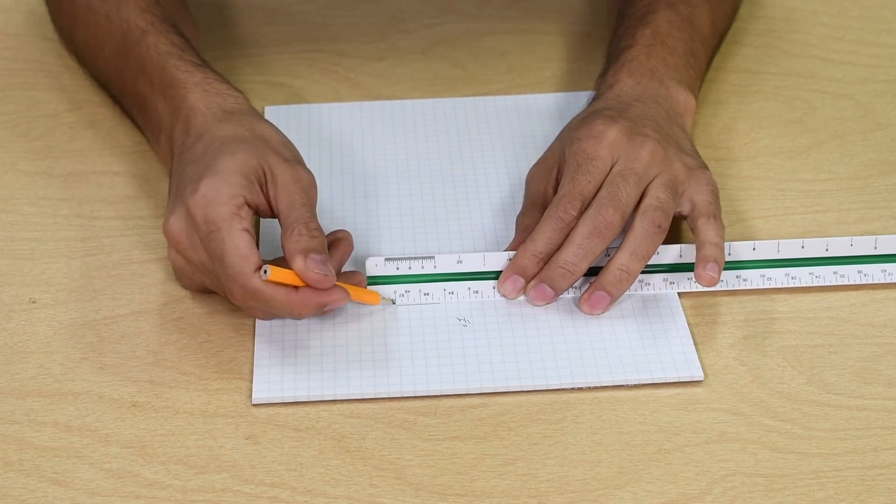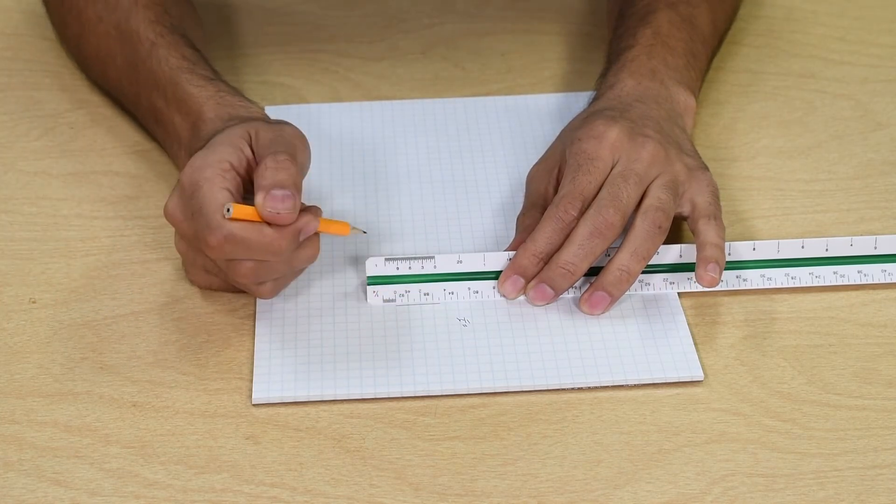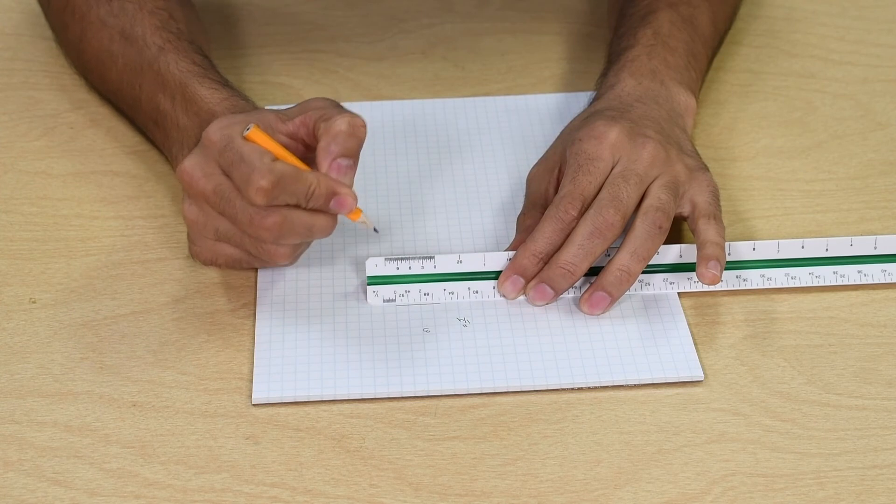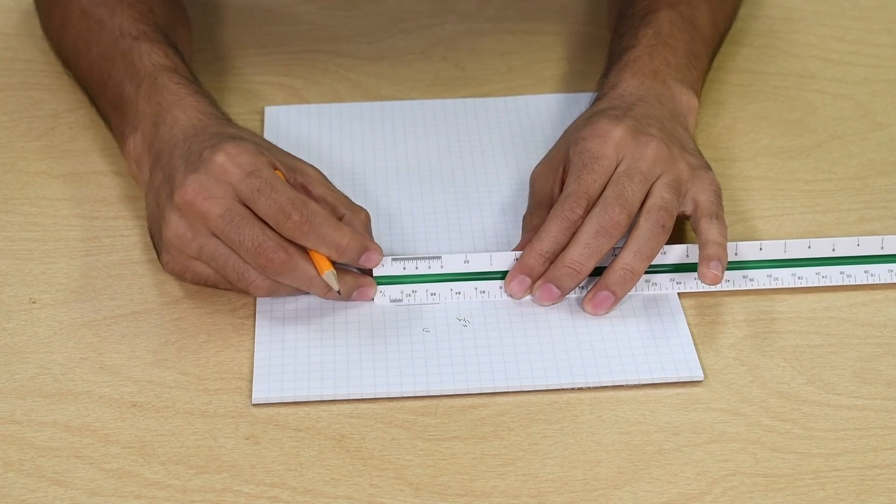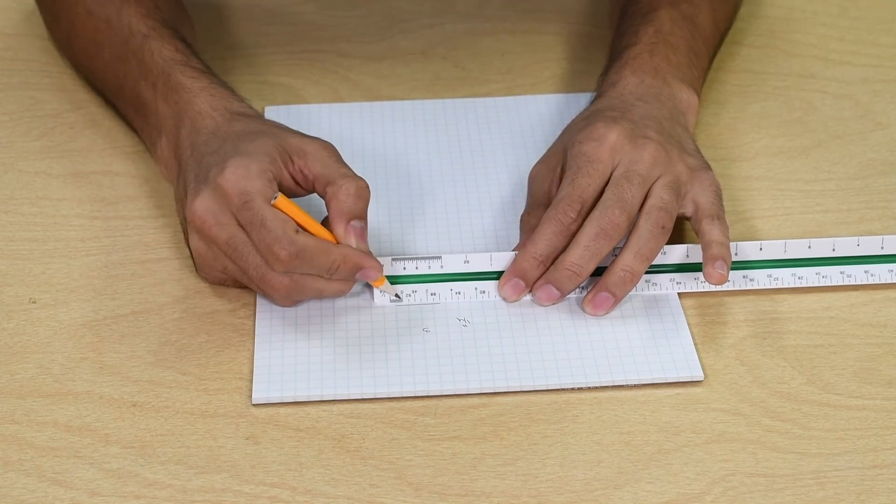First, you measure the number of feet. You put the end of the line at the zero mark and count the number of whole feet.